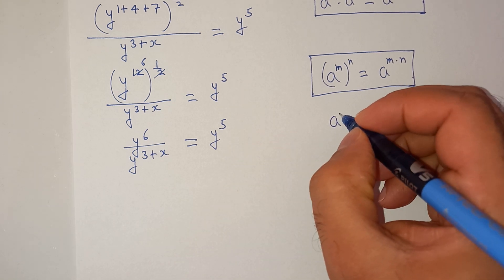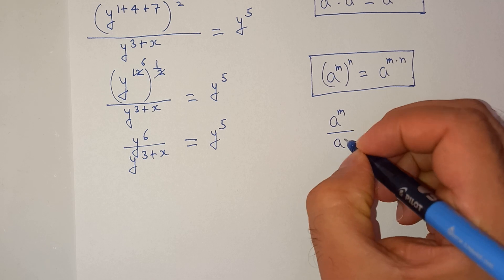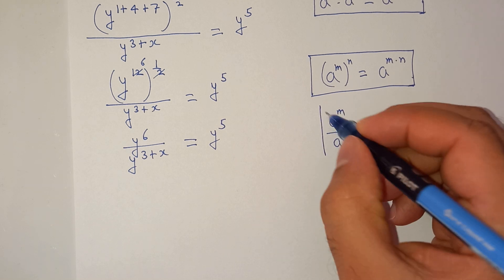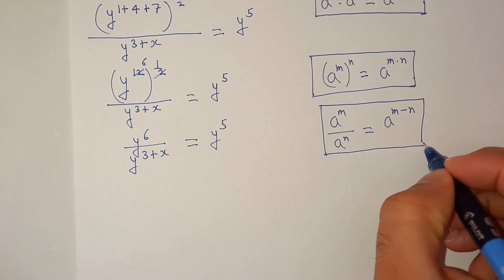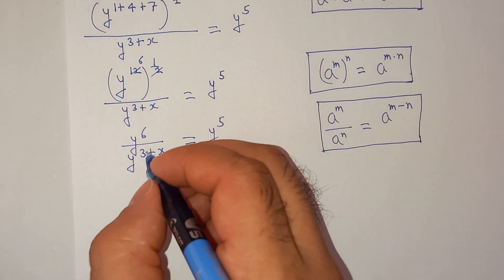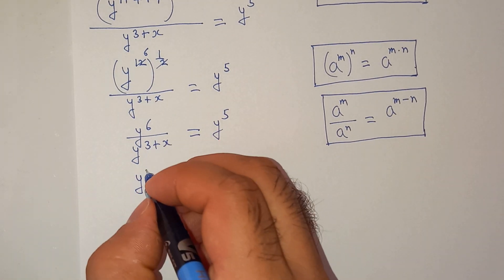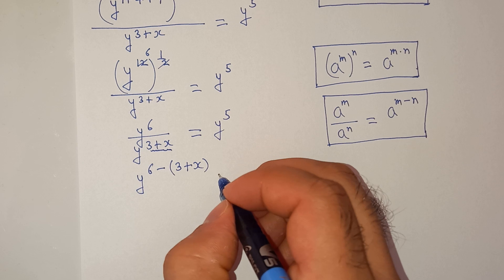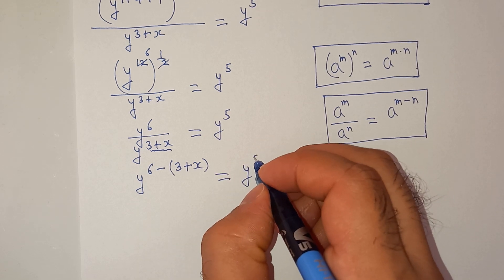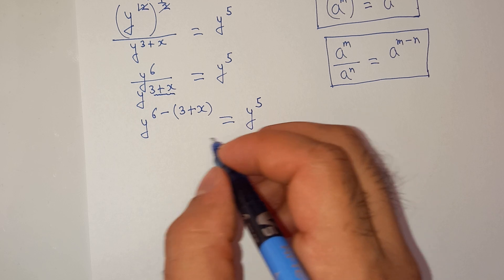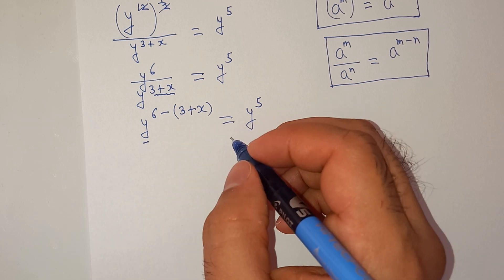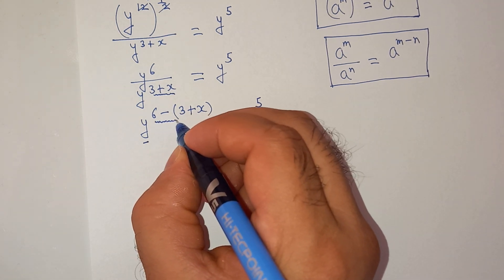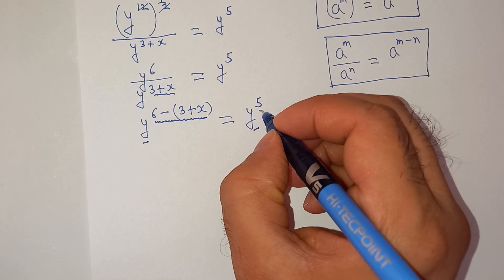Now we will apply this exponential rule which is a power m divided by a power n equals to a power m minus n. So according to this rule, this will be y power 6 minus the term 3 plus x equals to y power 5. Now the base y is common on both sides, so we can equate the exponents of the left side and the right side.